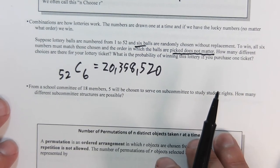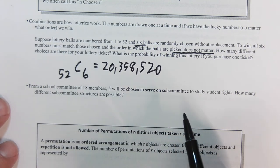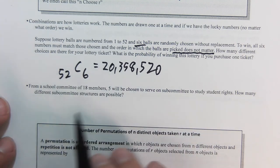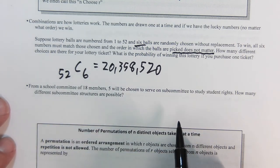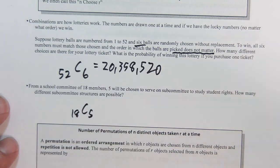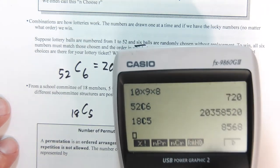The next one says school committee of 18 members, five will be chosen to serve on a subcommittee to study human rights. It doesn't say that the first one is going to be the president, the second one, or anything like that. So in this case, again, the order does not matter. So this is going to be 18 choose 5. So 8,568.